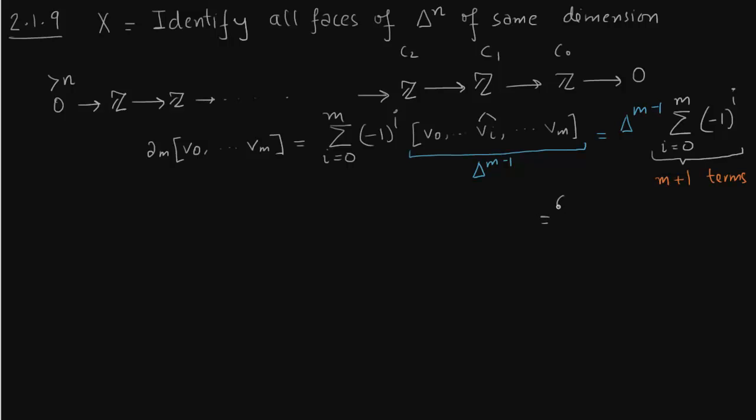So obviously this is zero when N is odd, because then there are even terms, so even terms cancel out. N is odd so N+1 is even. And similarly it is just delta^(N-1) if N is even.